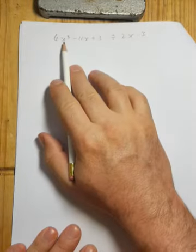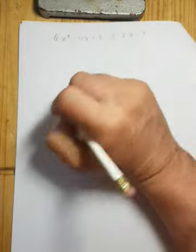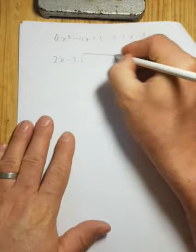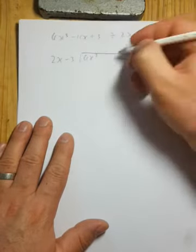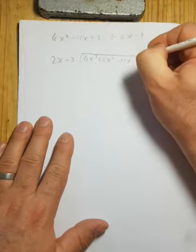If the highest power was an x squared, I'd still need to have the x. Okay, so there's no x squared here. So what do we do? Well, we write our sum as normal. But what we're going to do now is we're going to include an x squared in the form of 0x squared minus 11x plus 3.